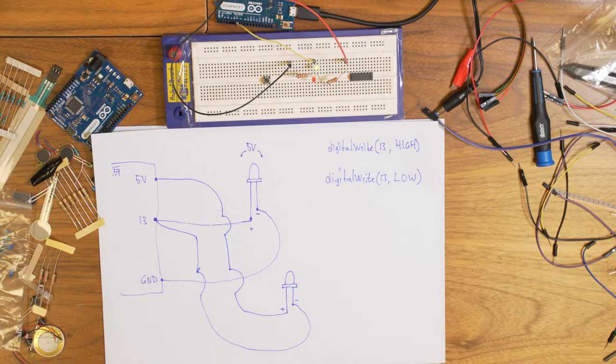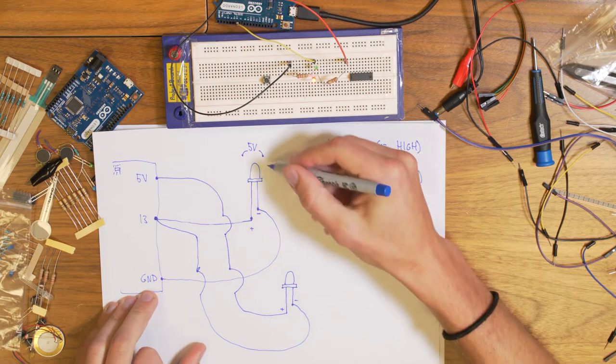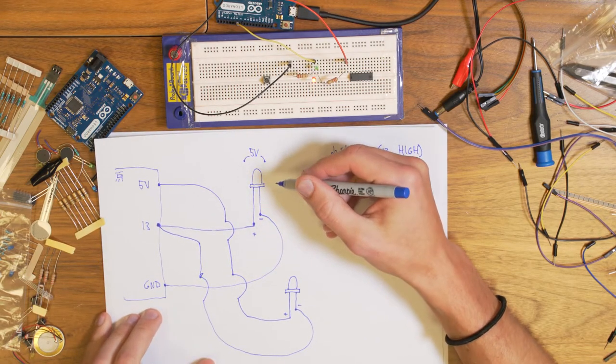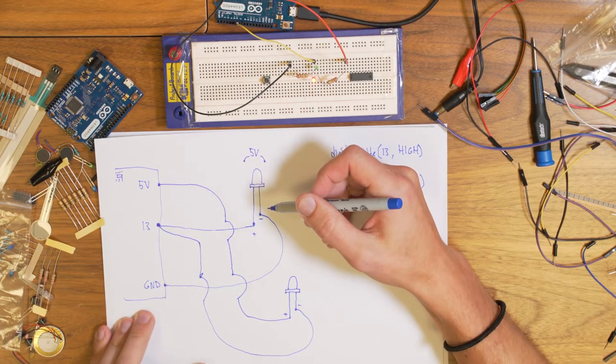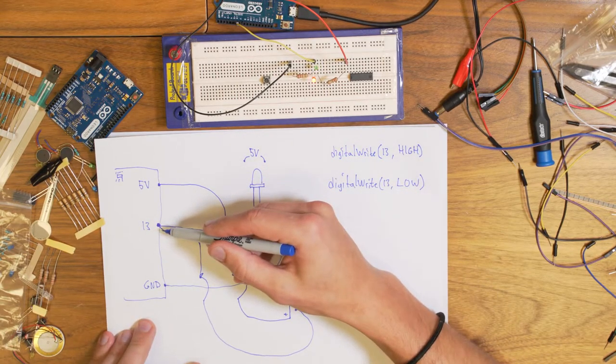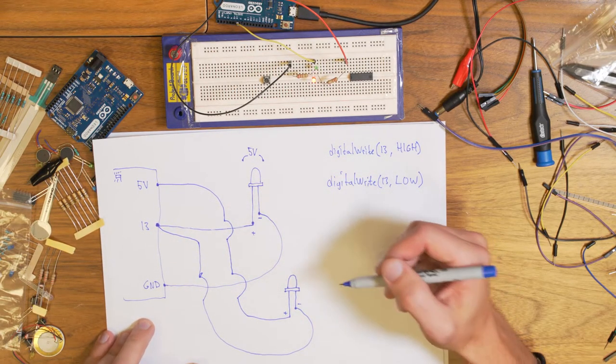So that is the difference between active low and active high. So the first example here with this LED, this LED is acting active high. So when I put a high value on the digital pin, it will actually light up.